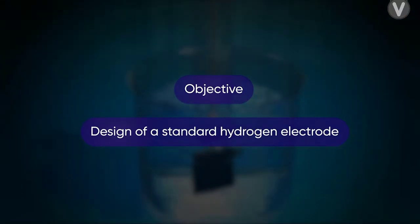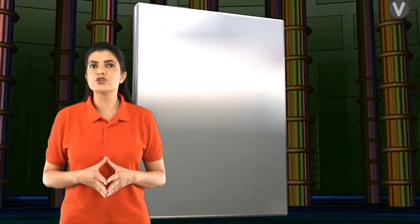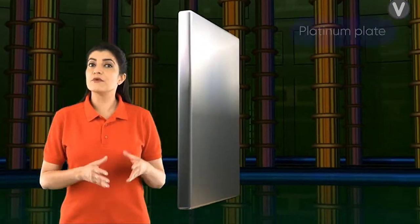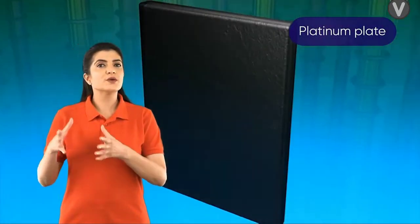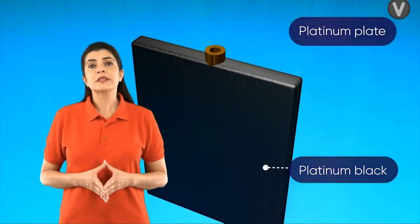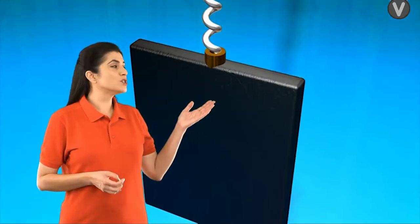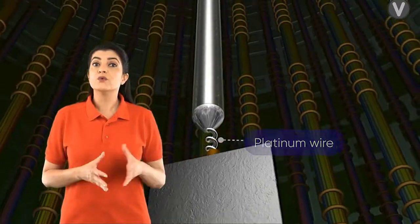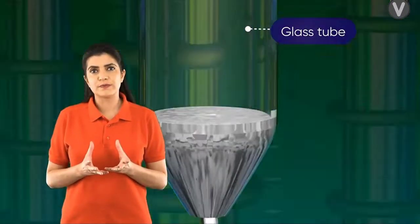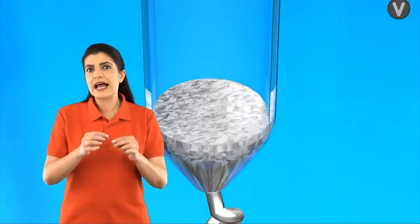Our objective is to study the design of a standard hydrogen electrode. A standard hydrogen electrode consists of a platinum plate coated with platinum black. The platinum plate is connected to a platinum wire which is sealed in a glass tube. A little mercury is placed inside the glass tube.